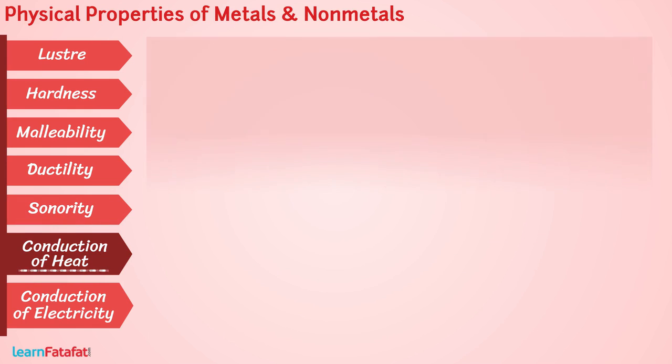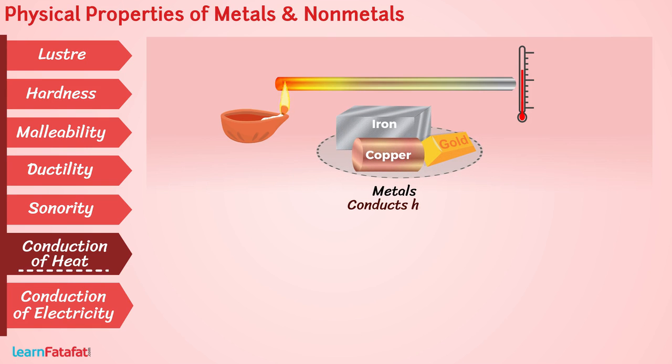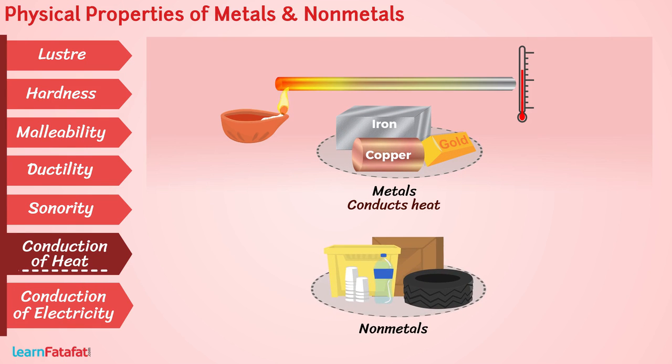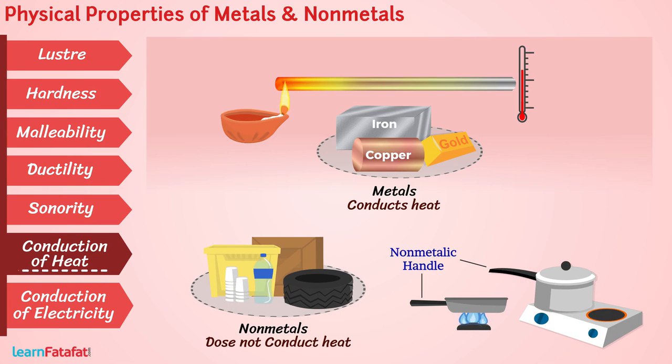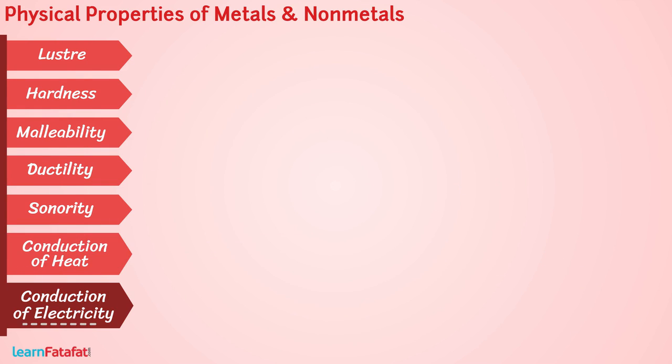Conduction of heat: If one end of an iron rod is heated, we can feel a rise in temperature at the other end. This means metals conduct heat, while non-metals do not. If non-metals conducted heat, would it be possible to use them as handles for cookers and pans? No.